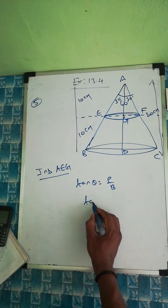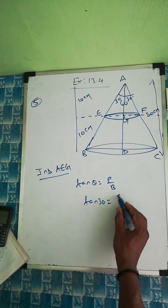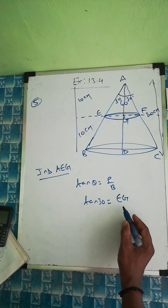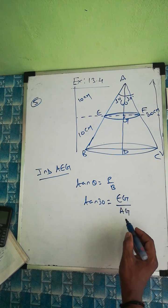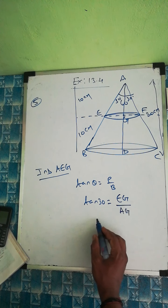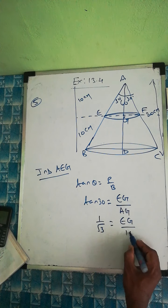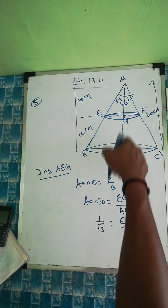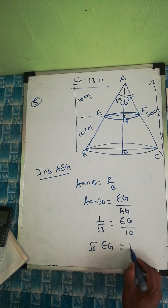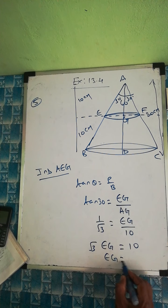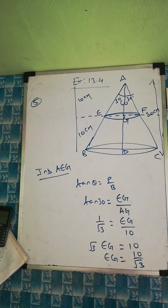In triangle AEG, we use tan(theta) = perpendicular by base. So tan(30°) = EG / AG. We know tan(30°) = 1/√3, and AG = 10. Therefore: 1/√3 = EG/10, which gives EG = 10/√3.